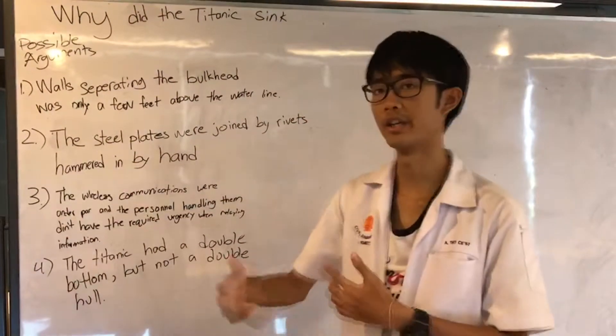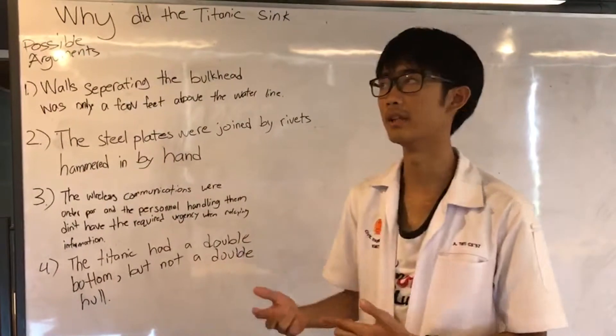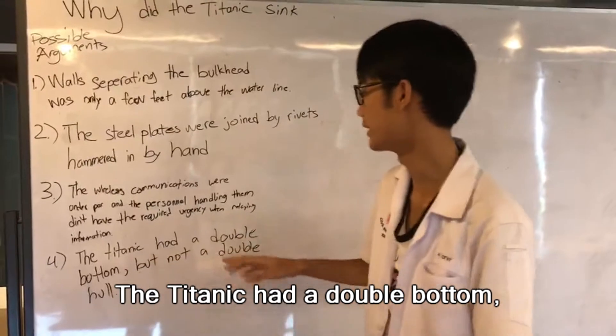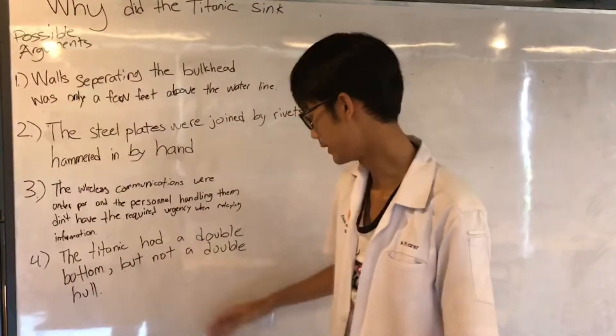The third one is about the communication when the emergency event happens on the ship. And the point is the Titanic has a double bottom but not a double hull which is the most important.